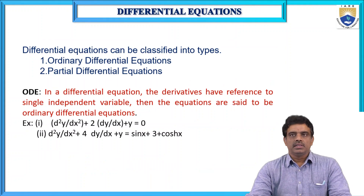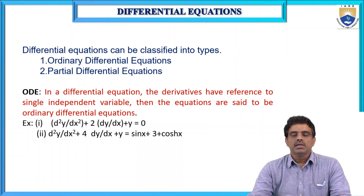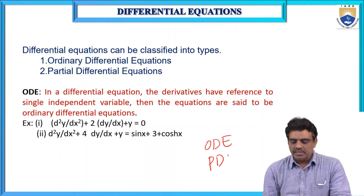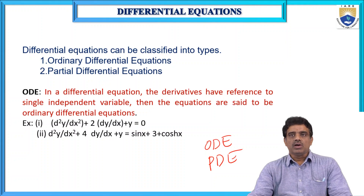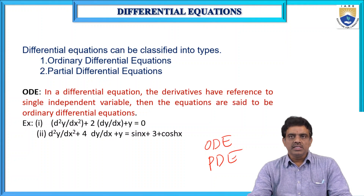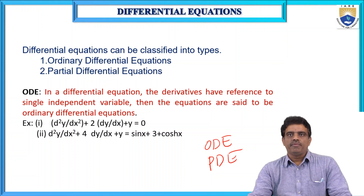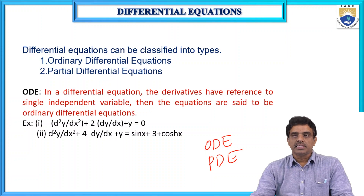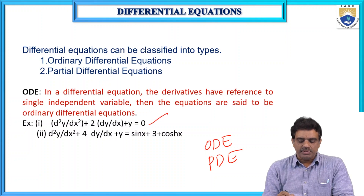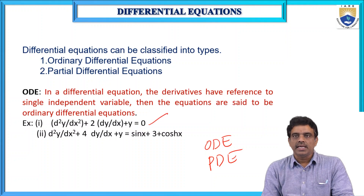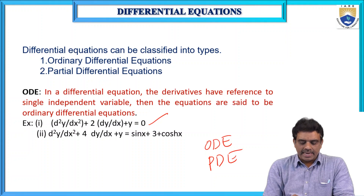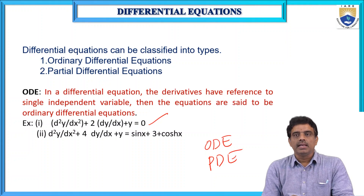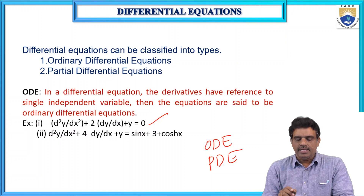Differential equations can be classified into two types: ordinary differential equations (ODE) and partial differential equations (PDE). In an ordinary differential equation, if the derivatives have reference to a single independent variable, the equation is said to be an ordinary differential equation. In the first example, dy/dx and d²y/dx² all have reference to the single independent variable x, so we call it an ordinary differential equation.